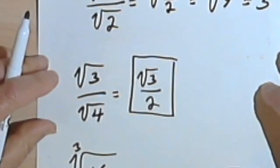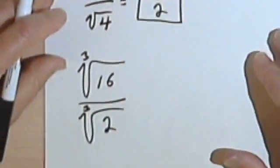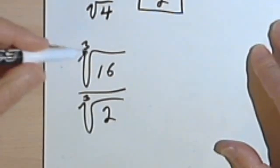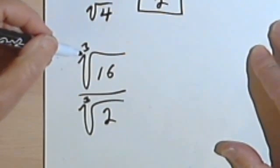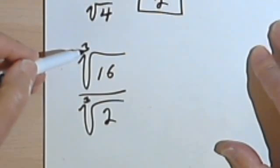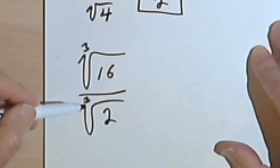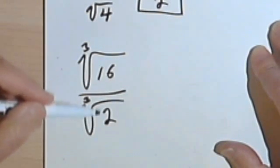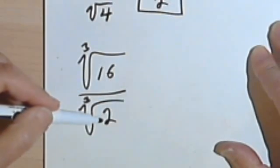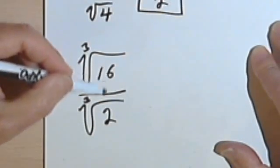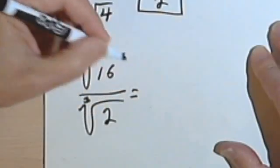As we saw with the product rule, this works for higher-level roots as well. So this works for third roots or cube roots. So here I've got the third root of 16 over the third root of 2. Neither of these is a perfect cube. But if I divide 16 by 2, I'll get an 8.